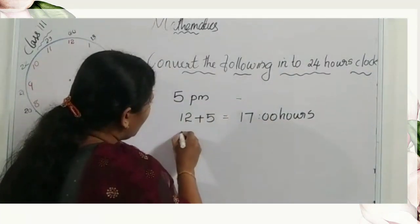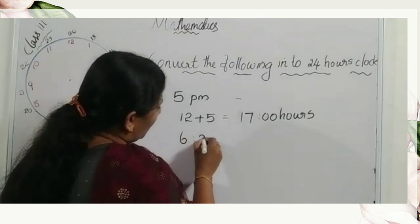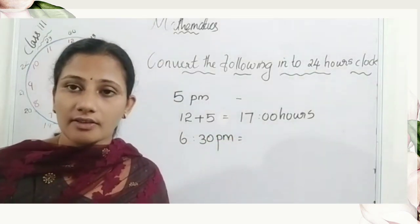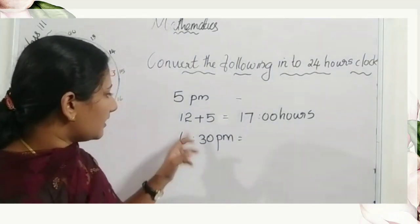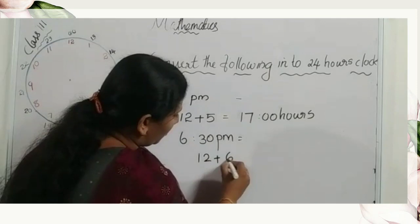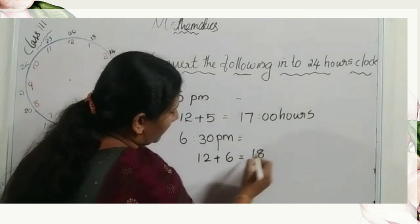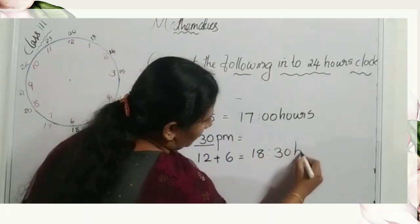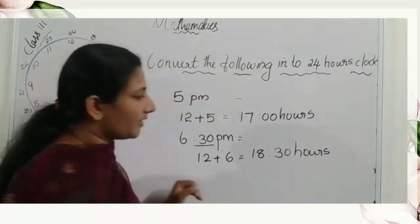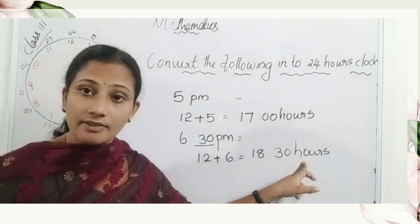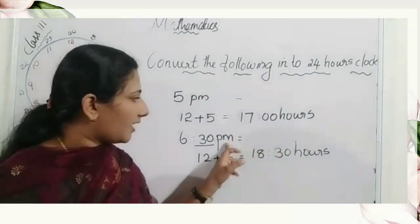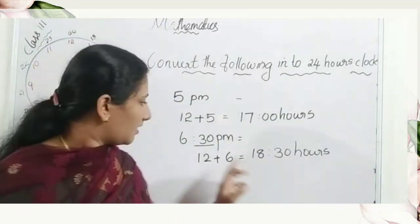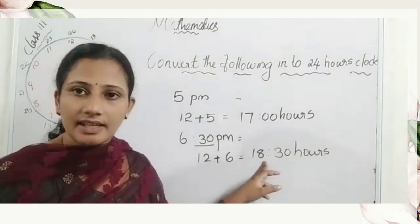Next, six thirty p.m. — how do we write it in the twenty-four hour clock system? We add six with twelve: that is eighteen. The thirty minutes stay unchanged. In the twenty-four hour clock system, a.m. and p.m. change into hours. So six thirty p.m. is eighteen thirty hours.